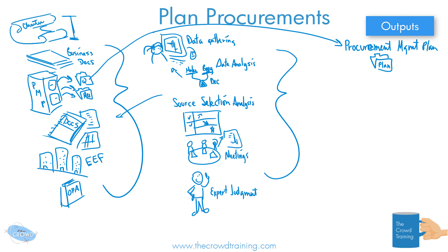We should also have a strategy. Maybe I'll draw a little chess piece, because we need to think about what direction we're thinking we're going to go or not go. That is our procurement strategy.